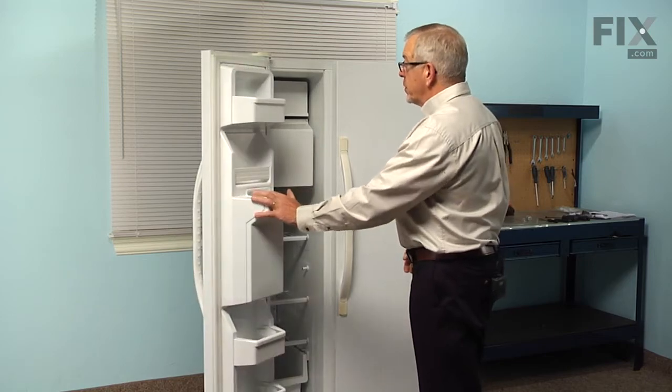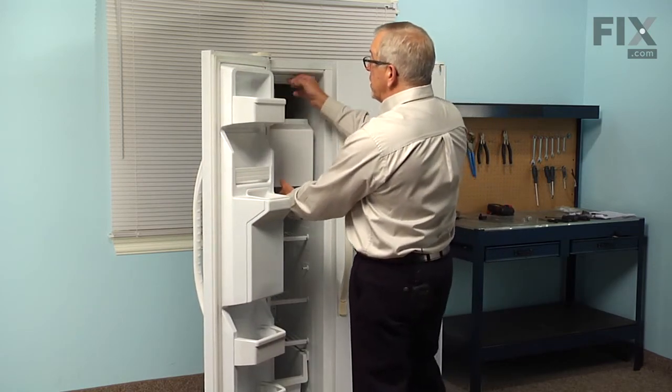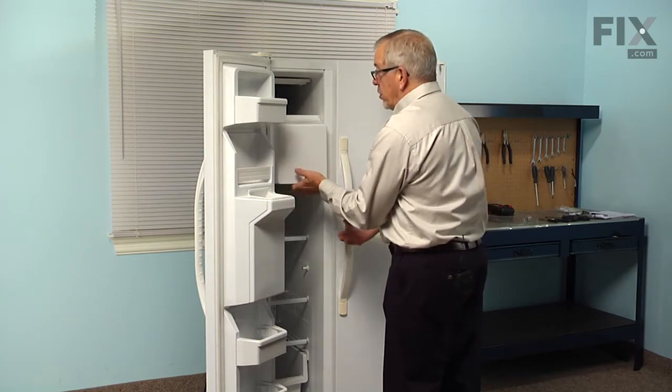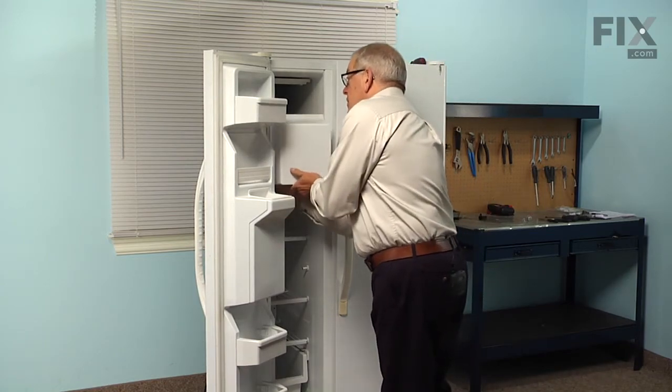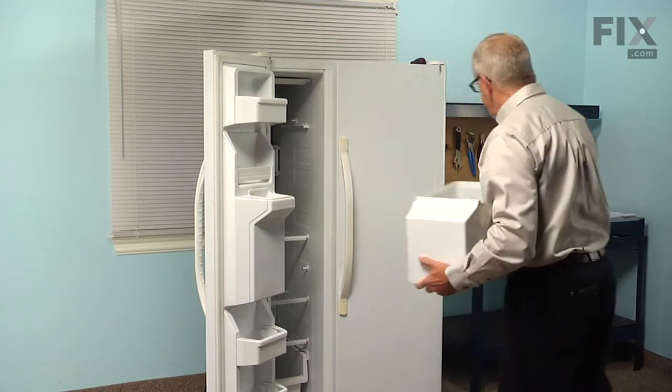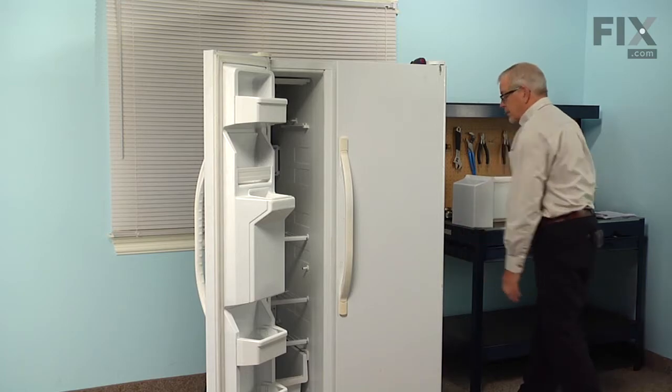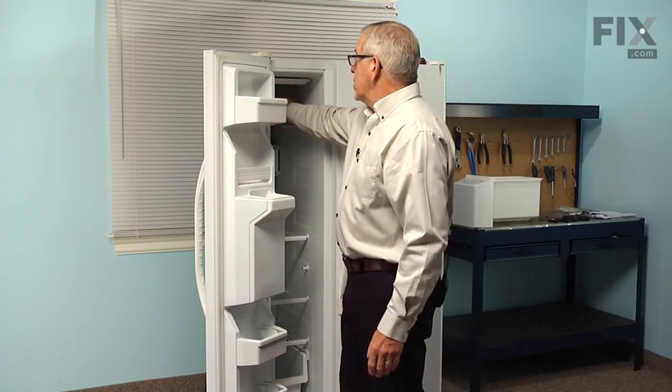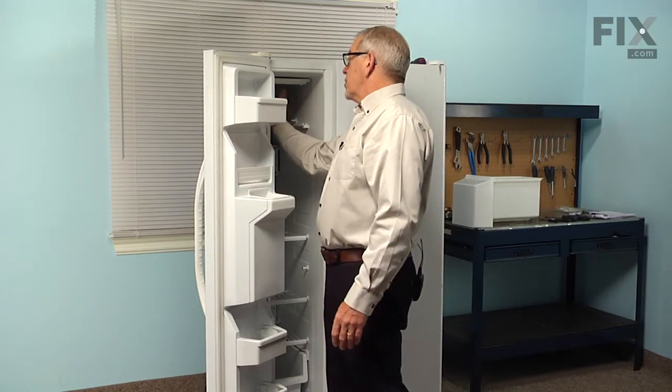Next we'll open up the freezer door and we're going to remove the ice bin, so just lift up on the front of it, pull it forward, remove it from the freezer and set it aside. Next we'll reach in and lift up on the shut off lever for the ice maker to turn it off.